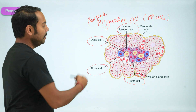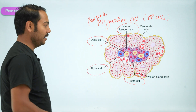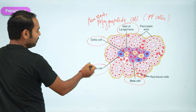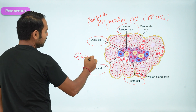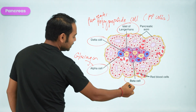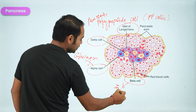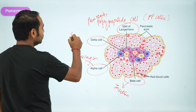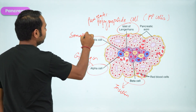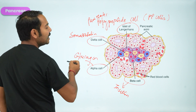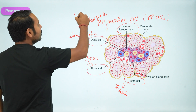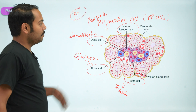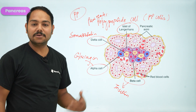Each cell type is responsible for hormone secretion: the alpha cell secretes glucagon, the beta cell secretes insulin, the delta cell secretes somatostatin, and the PP cells secrete pancreatic polypeptide hormone.